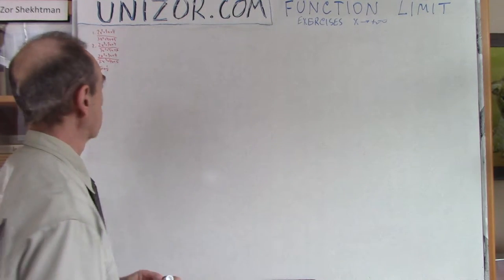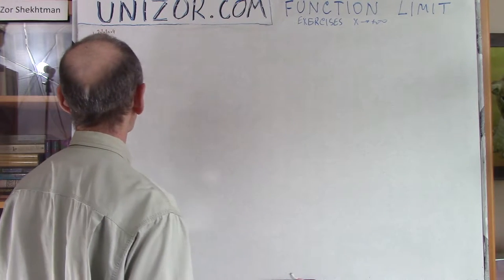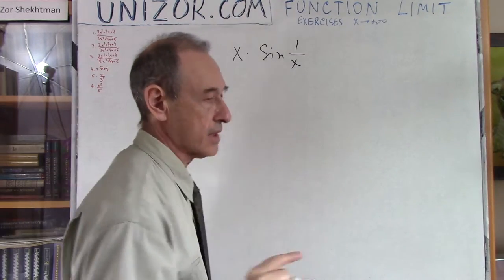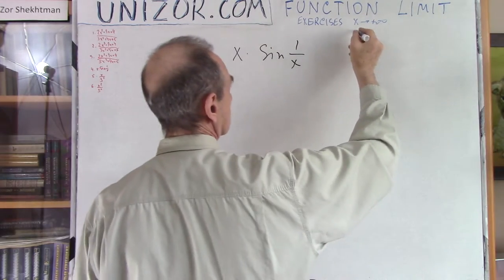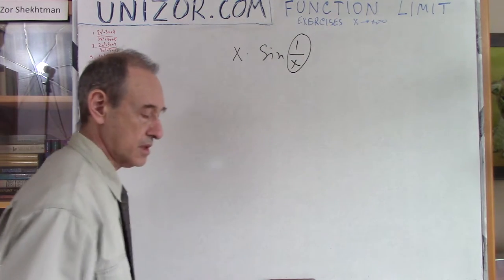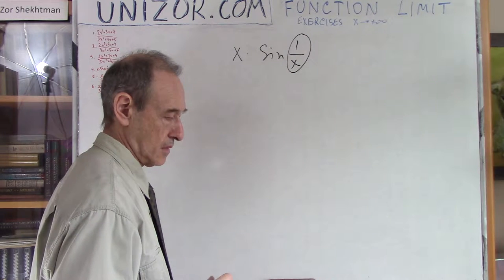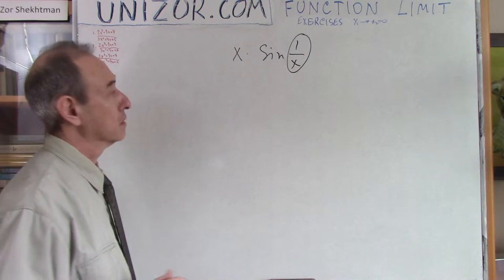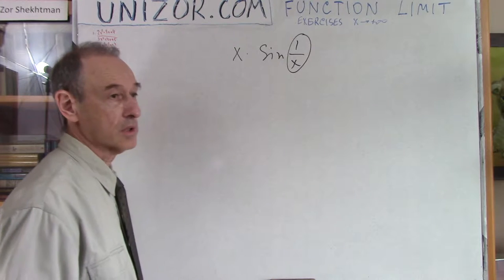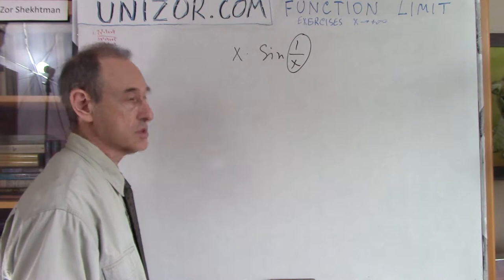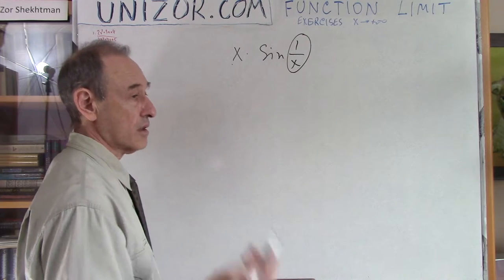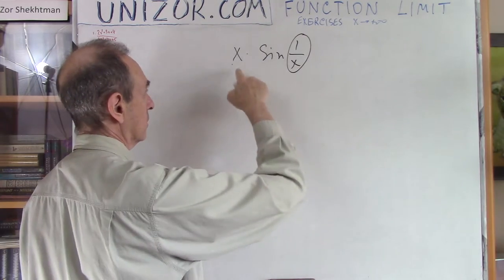Now something which is also simple but requires a little trick. As x goes to infinity, 1/x is an infinitely small value — it goes to zero — and sin(1/x) tending to zero would tend to zero as well. On the other hand, x goes to infinity. So it's an indeterminate form of infinity times zero. However, you can rewrite x·sin(1/x) as sin(1/x) divided by (1/x).